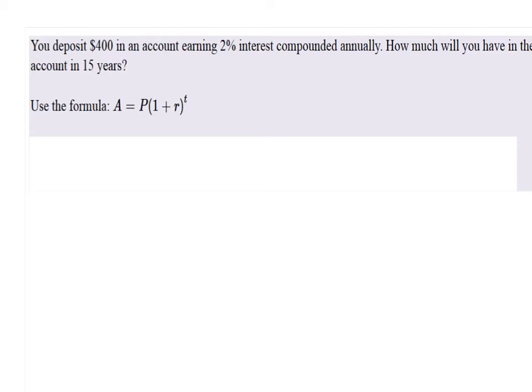A is the future value, P is the original principal, or how much you're depositing in this case.